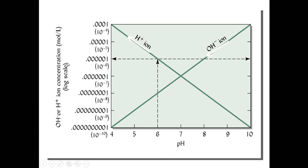It's important to point out that it's a logarithmic scale, so each jump is 10-fold. If we go from a pH of 6 to a pH of 7, we've jumped 10-fold. And a pH of 8 has 100 times the hydrogen ions — or 100 times the hydroxide ions — as a pH of 6. So the further the change, the greater the exponential difference.